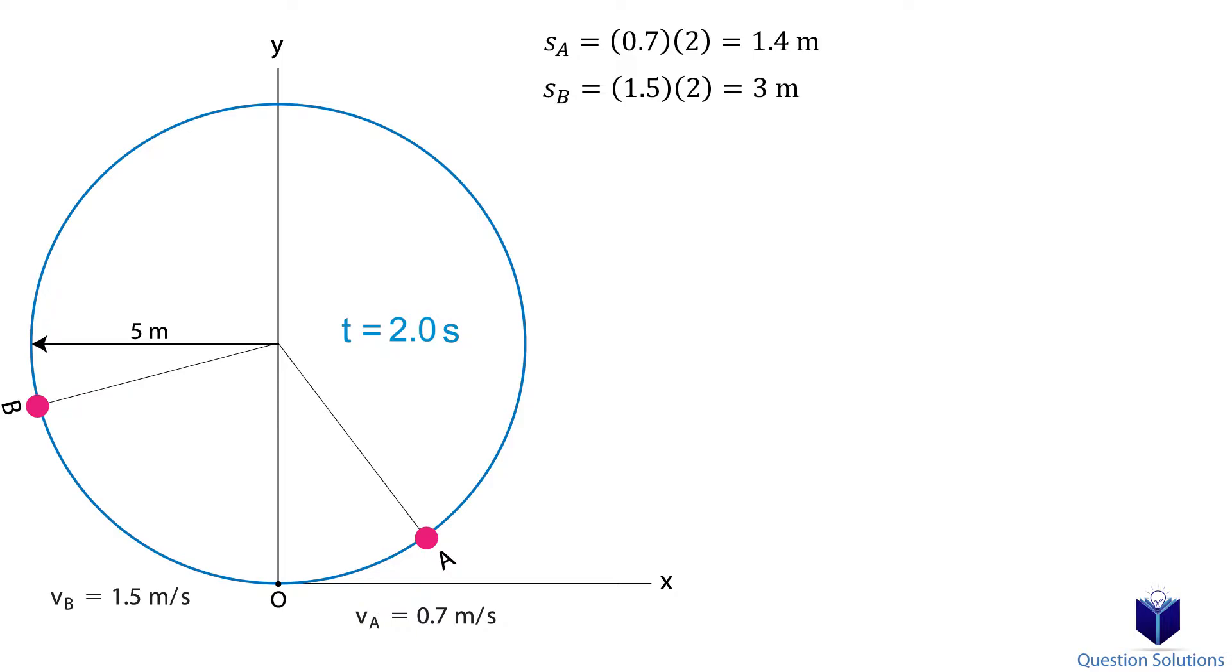The second part of the question asks us to calculate the position vector for each of the particles at 2 seconds. To find position vectors, we need to figure out the angle created from the movement of each of the particles. In other words, the angle made with respect to the y-axis. So how would we find that?